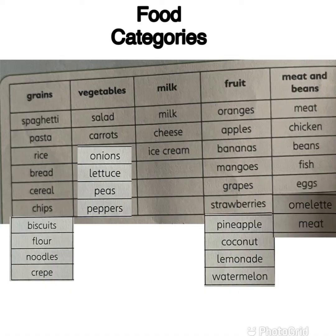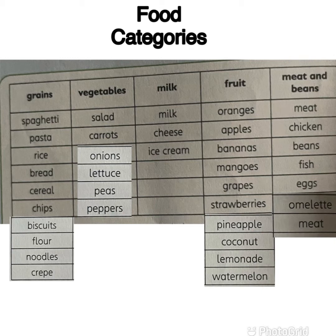We are going to start with the food categories. Kita akan tengok semula kategori makanan. Saya dah bahagikan ikut table — ada one, two, three, four, five. There are five tables: grains, vegetables, milk, fruit, meat and beans. Ada lima category. Kita tengok kategori yang pertama, kotak grains. Grains maksudnya bijirin.